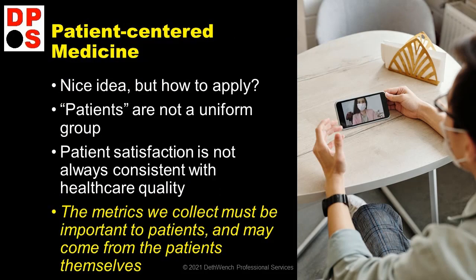While we were struggling with those ideas in the 1990s, as the 2000s came on we had these ideas of patient-centered medicine, which is a great idea — who's going to argue with that? I'm a patient; I want medicine centered around me. But how do you apply it? All patients are different; they're not uniform. Research shows that patient satisfaction is not always consistent with healthcare quality. For example, parents bring their kids to the pediatrician and say 'my kid's sick, give me drugs,' but the kid has a virus and antibiotics won't work. The parent is dissatisfied, but this is high healthcare quality — not giving out antibiotics. So the metrics we collect must be important to patients, but they may not be a measure of healthcare quality. How do we do patient-centered medicine? We were still stuck.